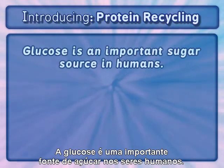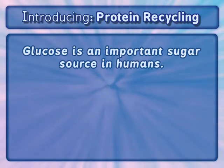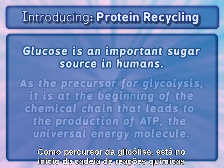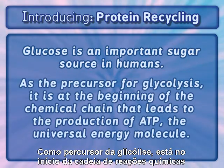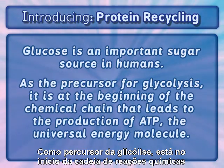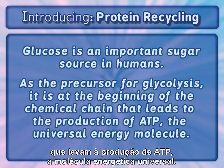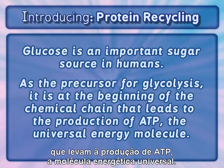Glucose is an important sugar source in humans. As the precursor for glycolysis, it is at the beginning of the chemical chain that leads to the production of ATP, the universal energy molecule.